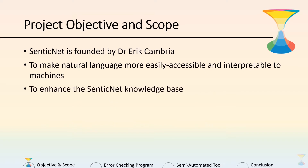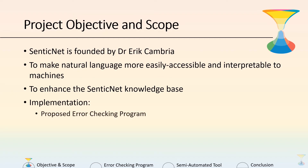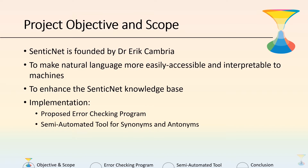The objective of my project is to enhance the Centinet knowledge base by improving and expanding it. The implementation consists of two parts: first, the proposed error checking program, and second, a semi-automated tool for synonyms and antonyms.